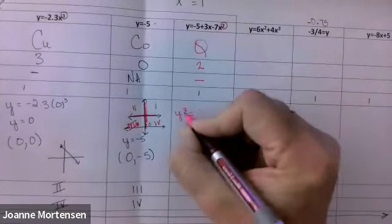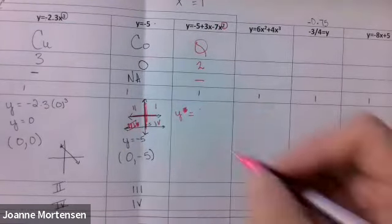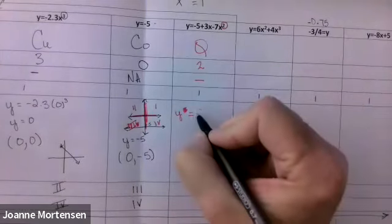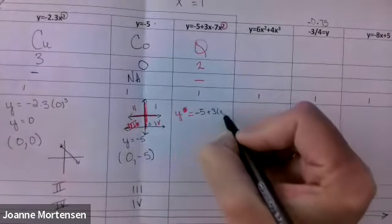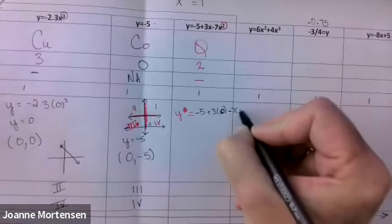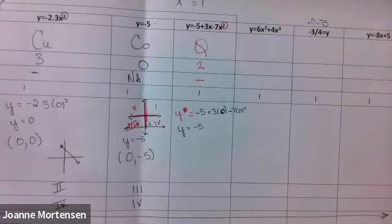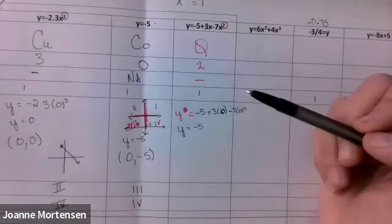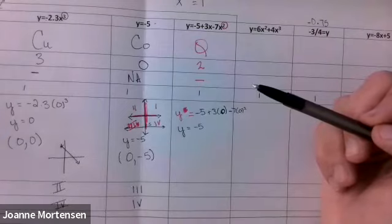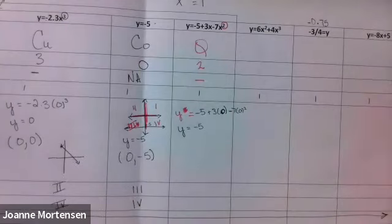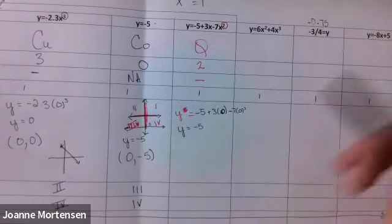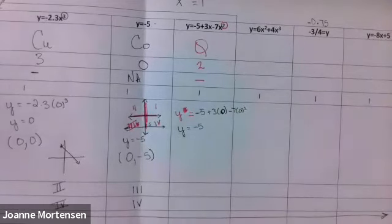Positive or negative? Negative. One y-intercept. Put the zero in right away — minus seven times zero squared. So y equals negative five plus zero — just the constant. What you may have noticed by now: when you're doing the y-intercept, x is zero, so any term that has x disappears and you're just left with the constant.